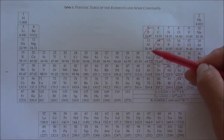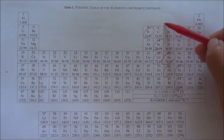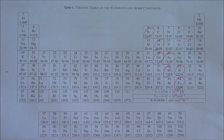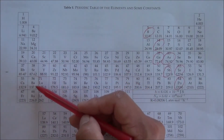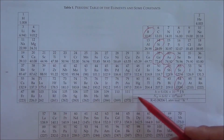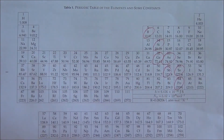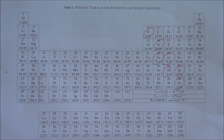The charges of the most stable ions of the transition metals group cannot be predicted. These metals are called transition metals, and their most stable ion charges cannot be predicted based on the periodic table alone.